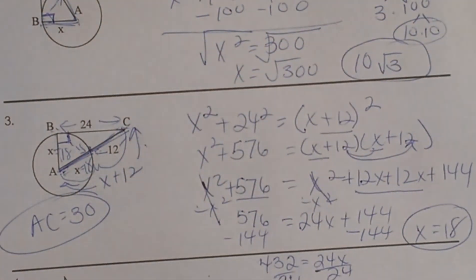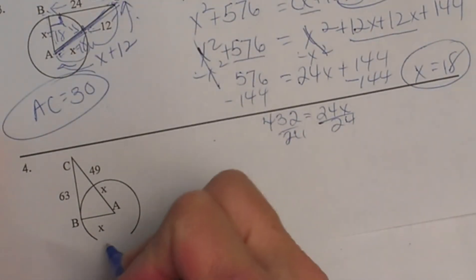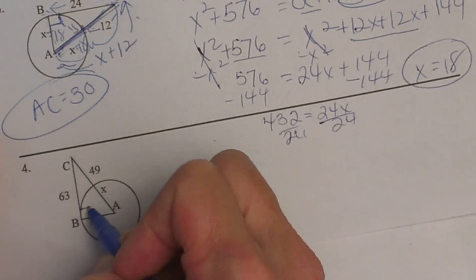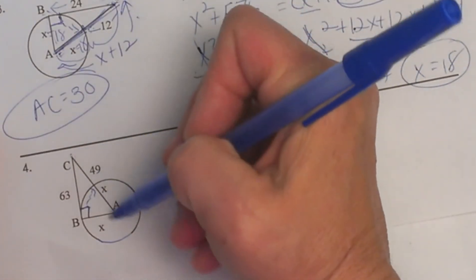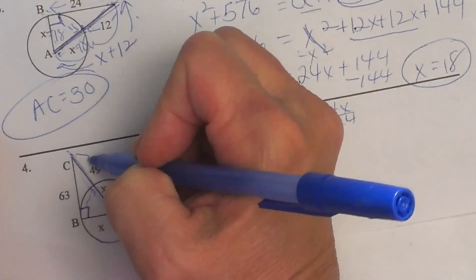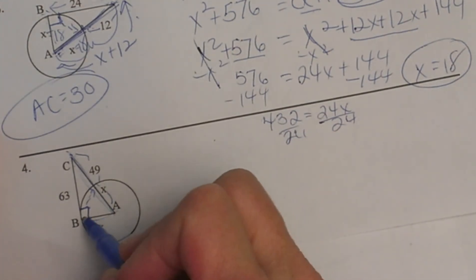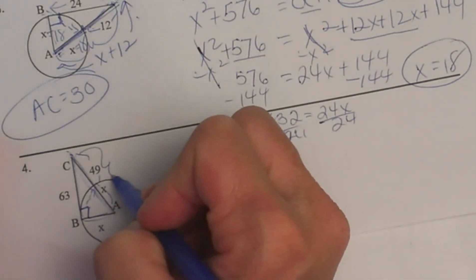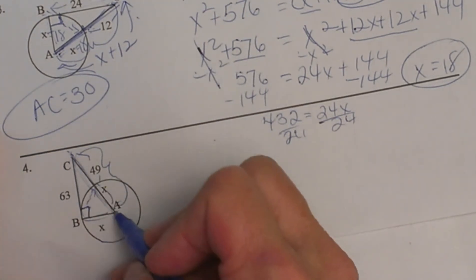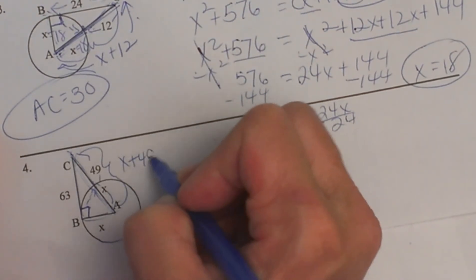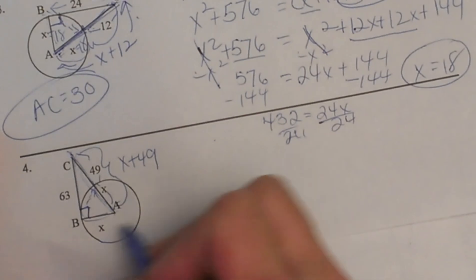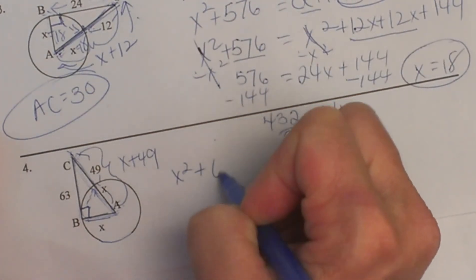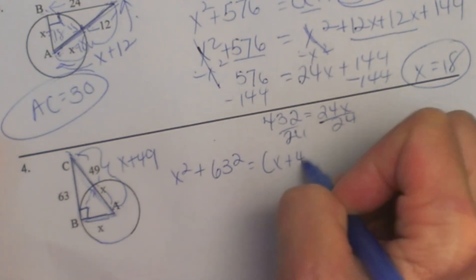Let's look at our last one. Number 4 is very similar to number 3, so you may want to pause the video and see if you can set it up. We have triangle ABC with a line of tangency, so I draw my right angle here. Looking opposite to find my hypotenuse — that is this whole side. This part is 49 and this part is x, which are both radii. The leg on the other side is 63. AC as an expression is x plus 49. Now using the Pythagorean theorem: x squared plus 63 squared equals x plus 49 quantity squared.